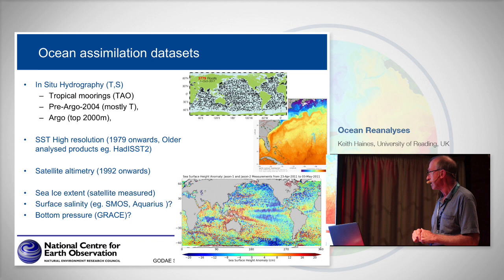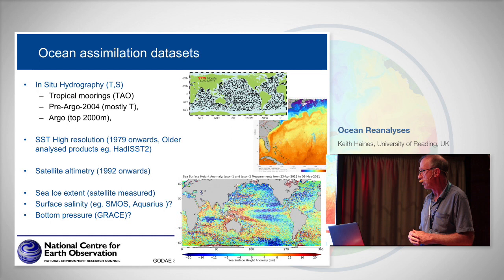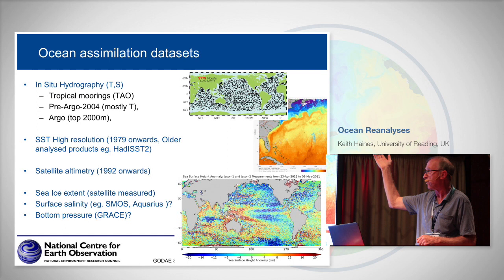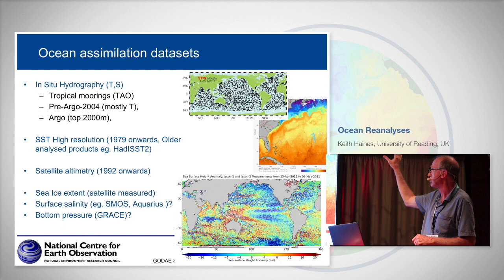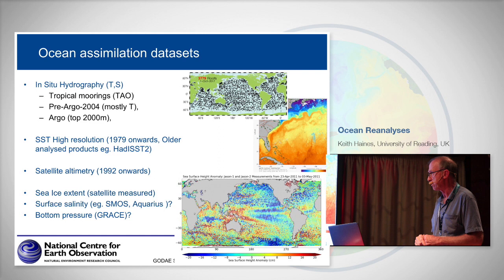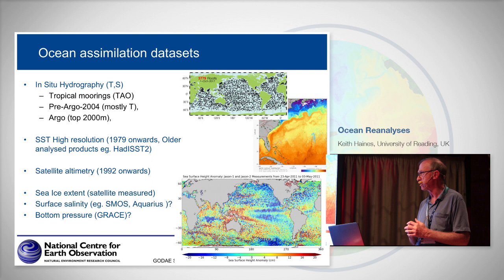Considering ocean assimilation data sets: if you look at in-situ hydrographic data, nowadays we're dominated by the Argo float program, which is a fantastic upper ocean program monitoring temperature and salinity down to about two kilometres. This is supplemented by mooring arrays, particularly in the tropics, which have been used for a couple of decades mainly for El Niño forecasting. Argo has only been present for the last 10 years or so. If you go back to the pre-Argo period, coverage in the ocean has been much less. These data are taken from databases like the World Ocean Atlas, Coriolis, or EN4 at the Hadley Centre.